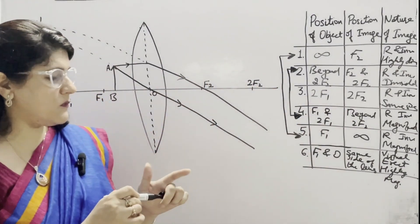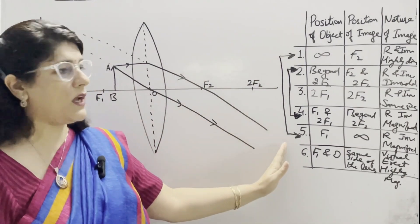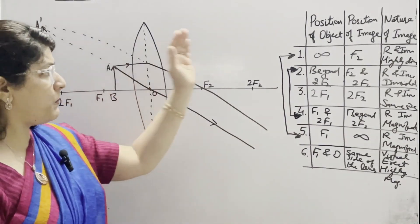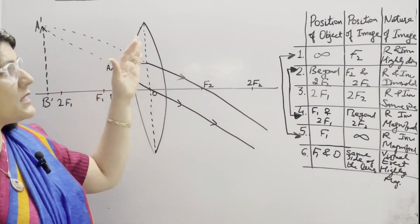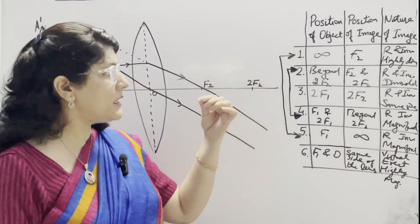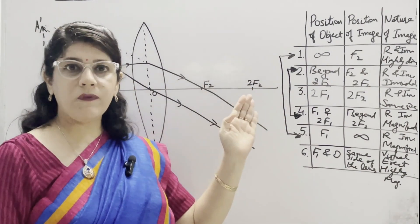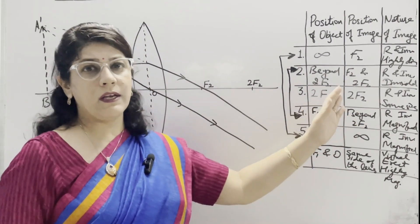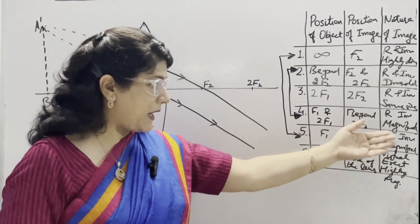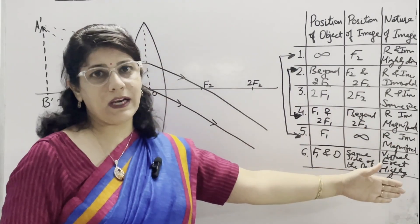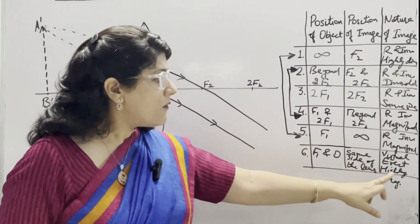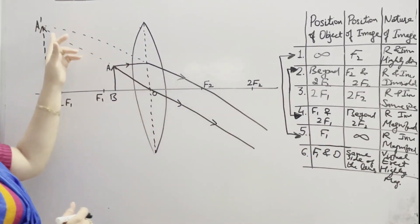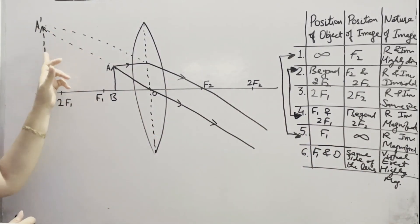To sum up all these cases: in the first five cases we get a real and inverted image. Starting from infinity, the image is highly diminished, then diminished, then at 2F it becomes the same size, then between f and 2F it starts getting magnified, and finally highly magnified. But in the last case, with higher magnification, the nature changes — it becomes virtual and erect, and you need to draw this virtual image as dotted.